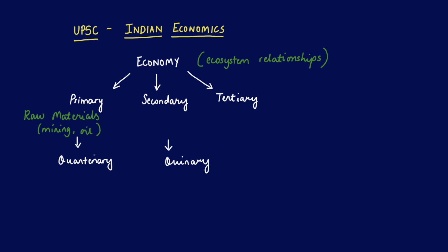Next we have the secondary sector, which is more of an industrial sector. In the primary sector we extracted raw materials from the land; in the secondary sector we manufacture or process those raw materials. This is where manufacturing takes place.